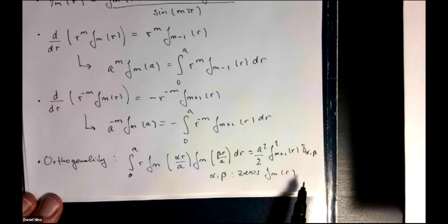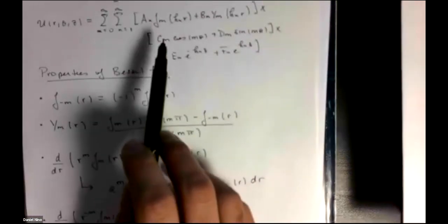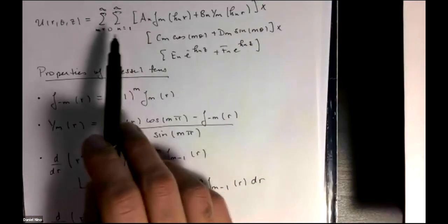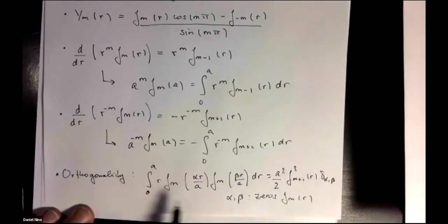Where to satisfy a boundary condition, we will have to find the coefficients of our sum over here. And we will need to reduce or kill every term in the sum except for one by using the orthogonality of Bessel functions. And in the next video, we'll go through an example of how to do that.